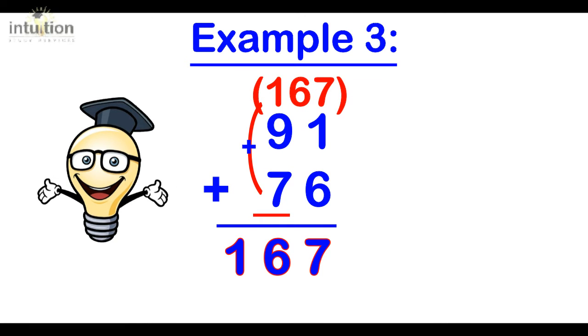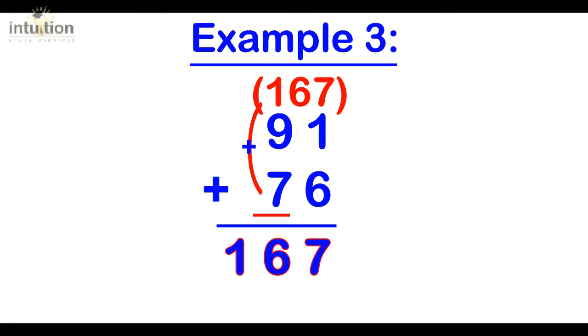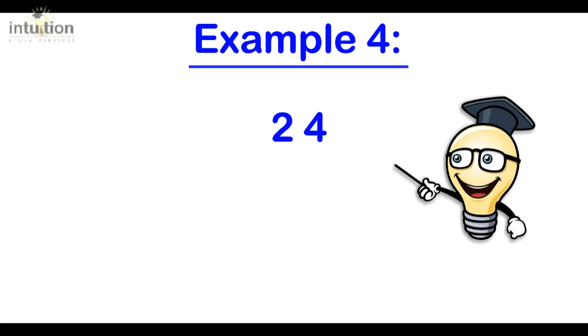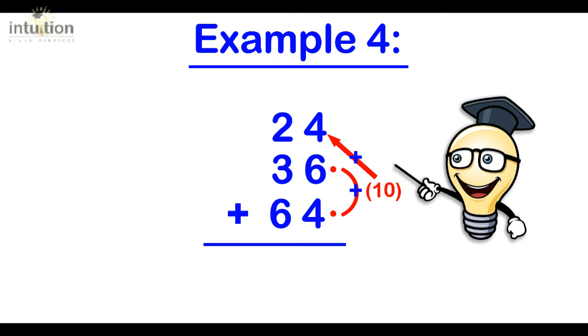Okay, so let's take a look at another example. We've got 24 plus 36 plus 64. Okay, so what we do first is we fix the 24 and instead of just adding the 6 to the 24 making 30, we can notice that the 6 and the bottom 4 complement to make 10 which we can directly add to the 24 making 34.